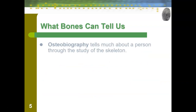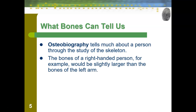An osteobiography tells much about a person through the study of their skeleton. One simple example is that the bones of a right-handed person's right arm would be slightly larger than those of the left arm, because the muscles on that arm are also slightly larger, which makes the bones slightly larger. A trained forensic anthropologist would be able to tell if a person was right-handed or left-handed — that's just one small example of what they can do.